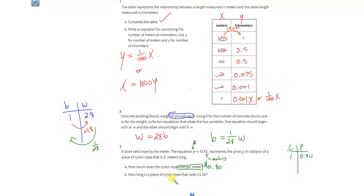And then how long is a piece of nylon rope that costs a full dollar? Well, that would be when the price is equal to one whole dollar. And we know that we can multiply the length times 0.8 to get the price, but to work backwards, we would have to multiply by the reciprocal of 0.8.